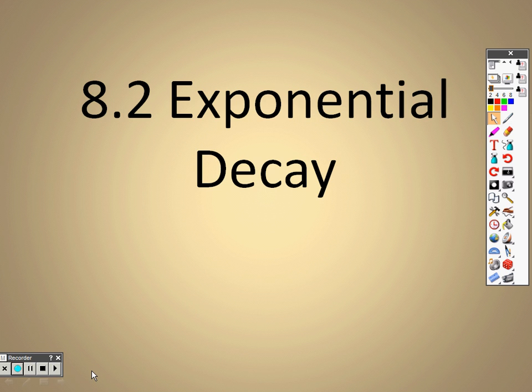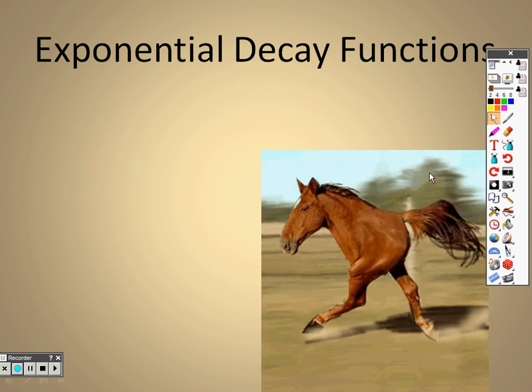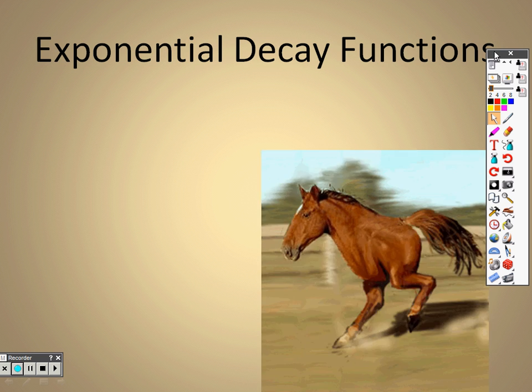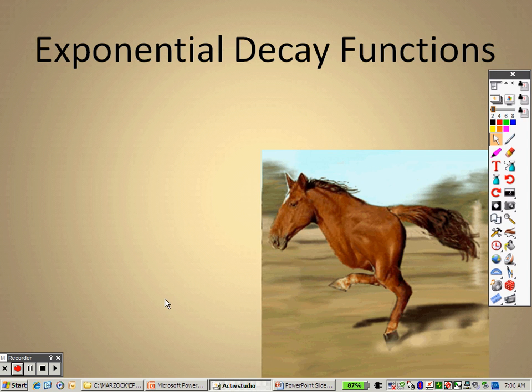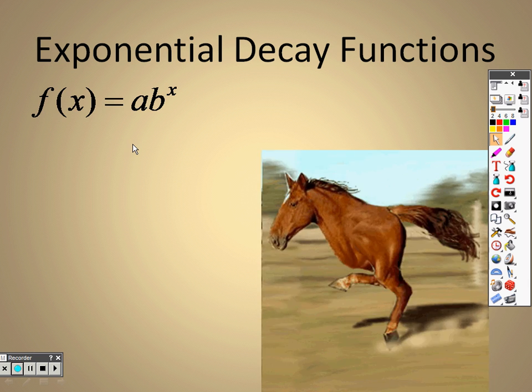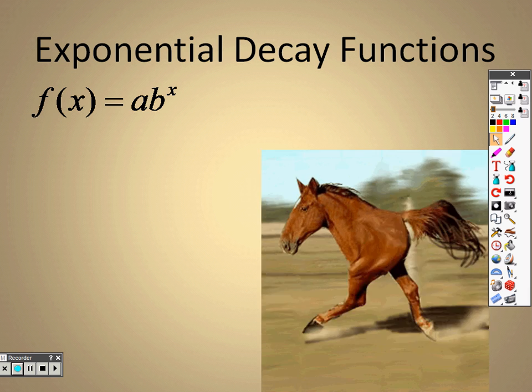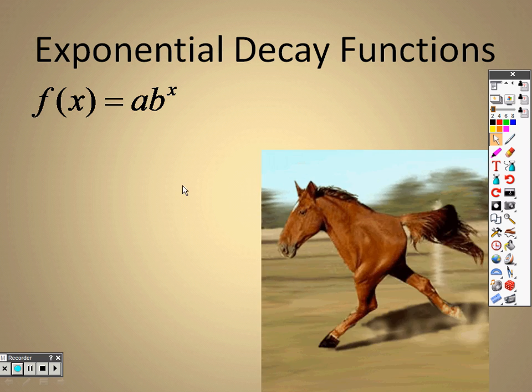8.2 exponential decay is what we are talking about now. When we take a look at this, we have exponential decay functions. The exponential decay function looks exactly like the exponential growth function - they look the same. You have an a and you have a b and you still have a variable to the x, except there's one difference I want you to keep in mind.